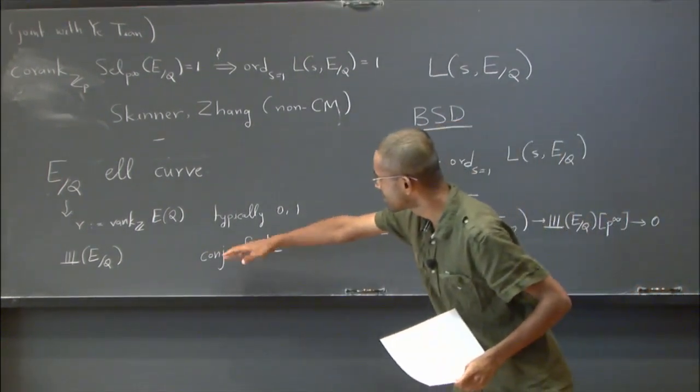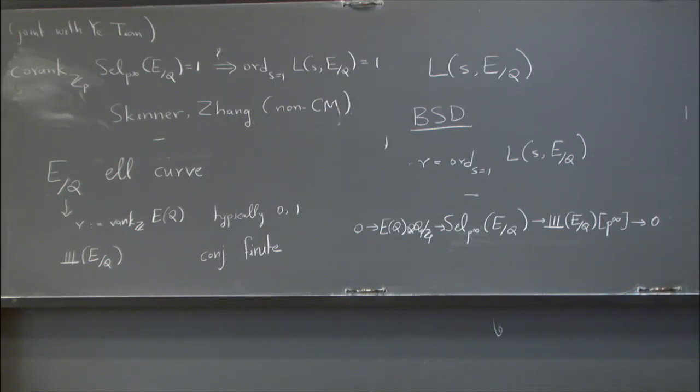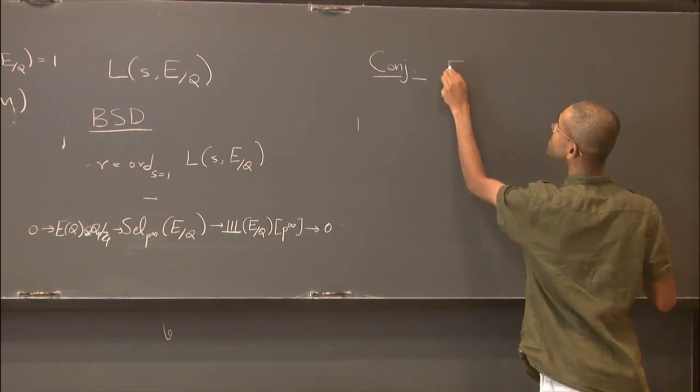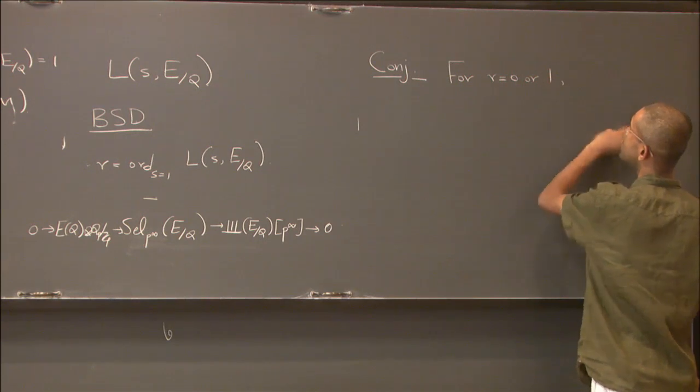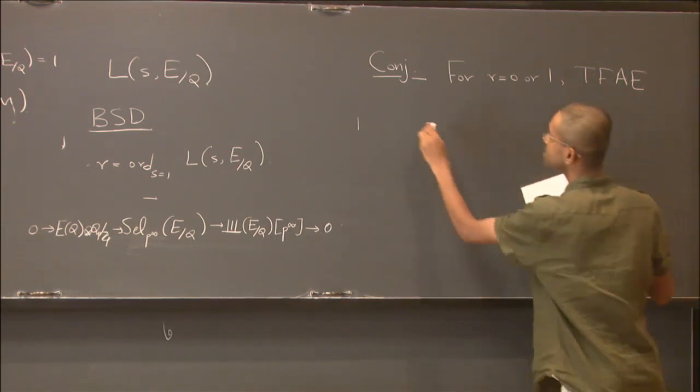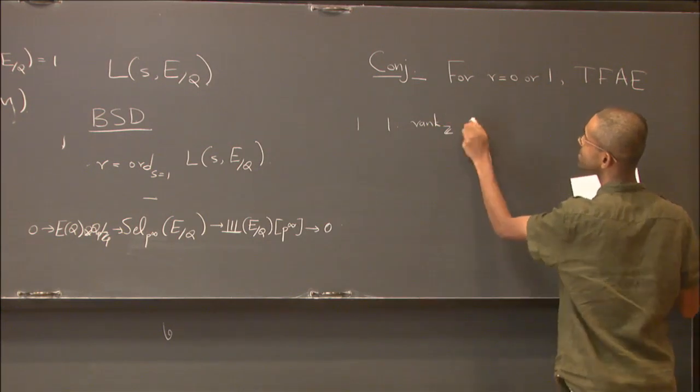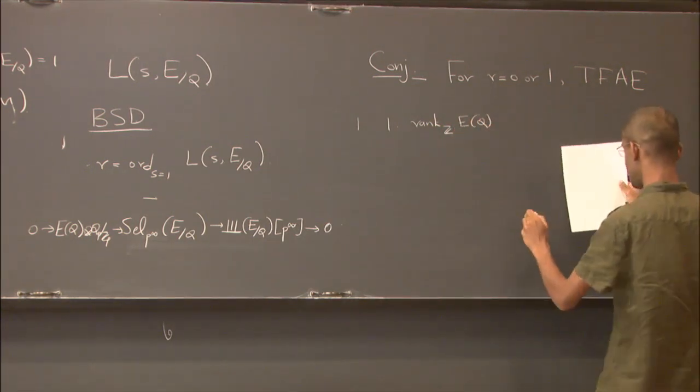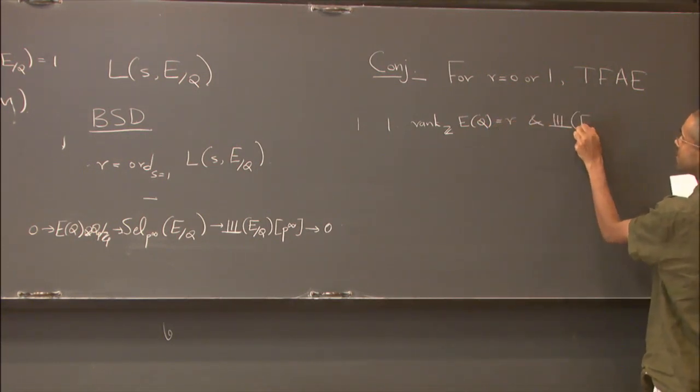So now, because of sort of BSD and finiteness of expected shaft, we can just rewrite some conjecture which is just putting things together, but maybe so for r equals zero or one, the following are equivalent. So the first one is the rank is, that's all, just the notation, but recall. So rank is r and the sha is finite.